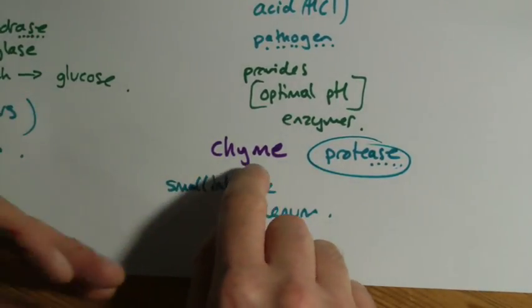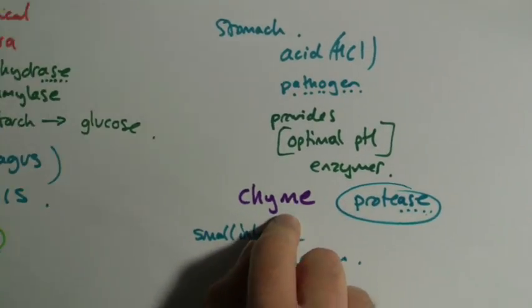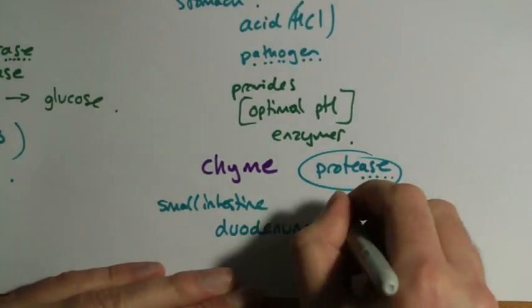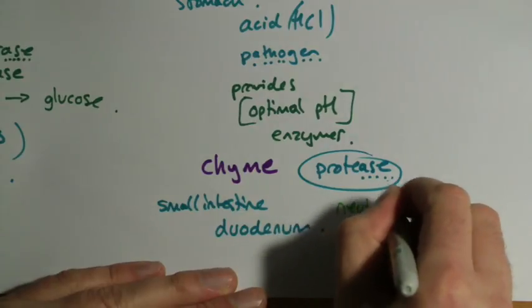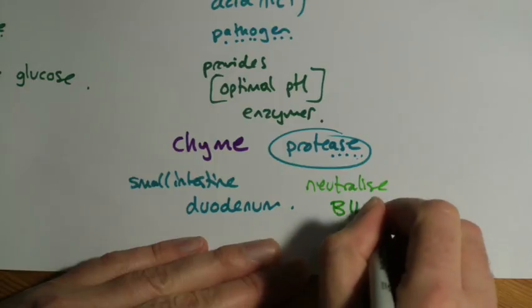The chyme comes out. It's this mush. But it's also quite acidic. So one of the things that has to be done is you have to neutralize that acid. And that is done with this substance called bile.